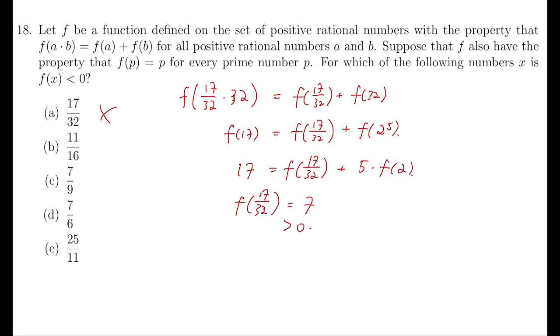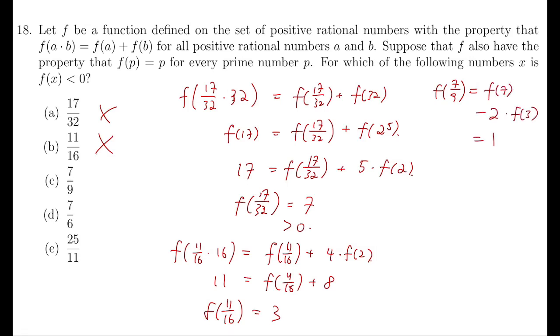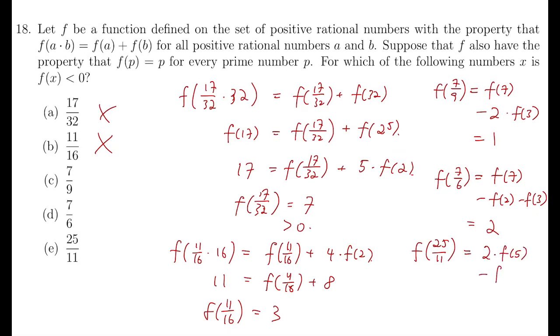We can do the same for options B to E. So, F of 16 is 4 times F of 2. Left-hand side is 11. And so F of 11 over 16 is 3. Similarly, F of 7 over 9 is just F of 7 minus 2 times F of 3, and that's 1. And F of 7 over 6 equals F of 7 minus F of 2 minus F of 3, and that's 2. Finally, F of 25 over 11 equals 2 times F of 5 minus F of 11, which is minus 1. And that's negative, so the answer is E.